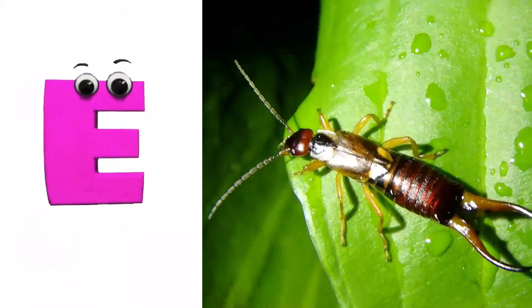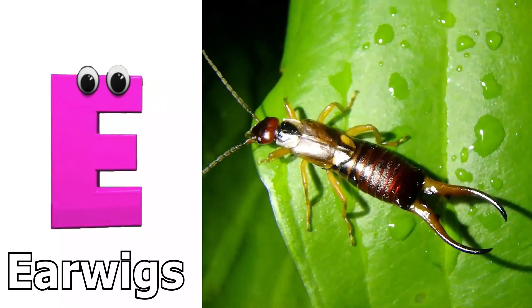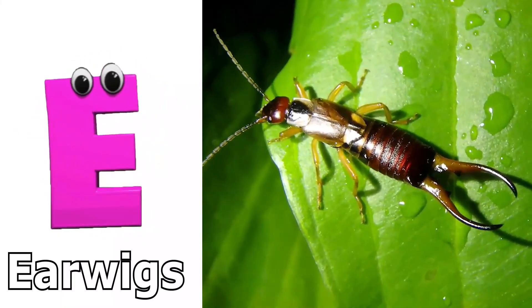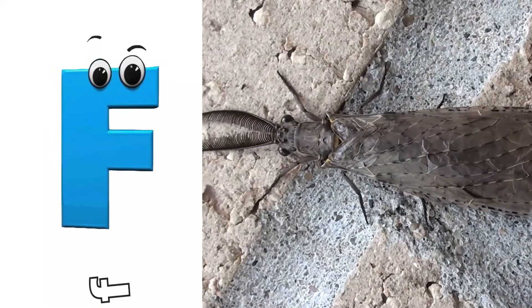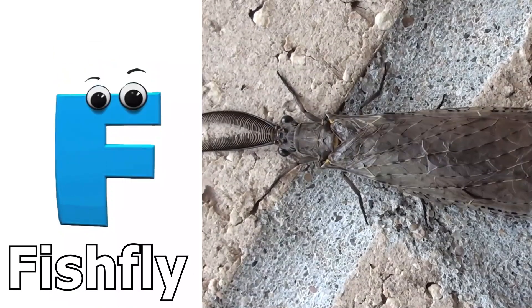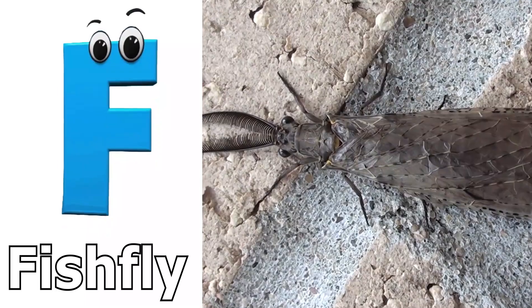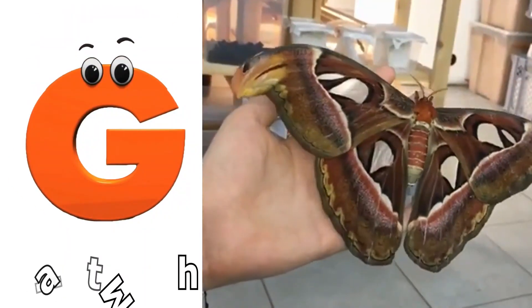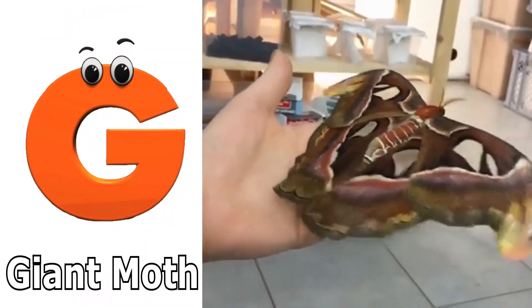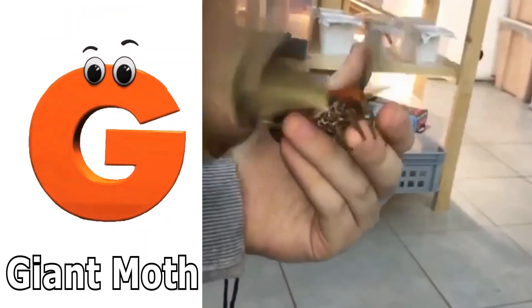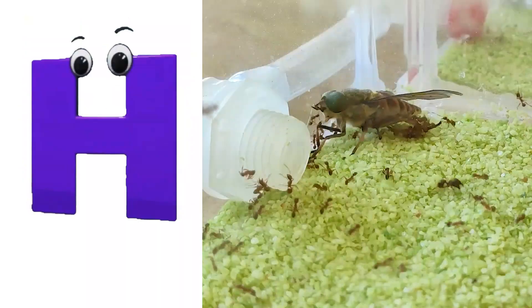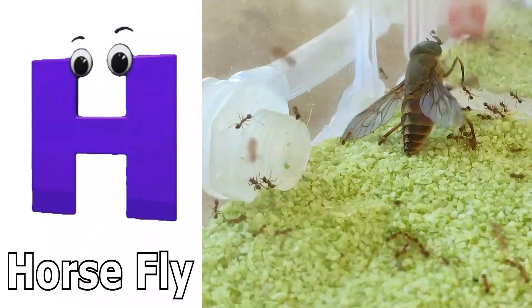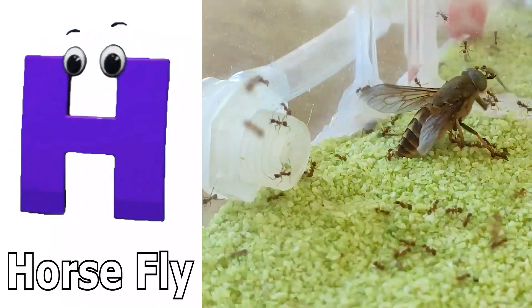E is for earwigs. F is for fish fly. G is for giant mom. H is for horse fly.